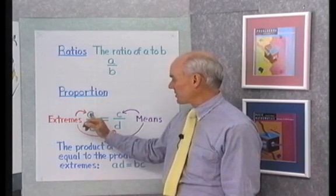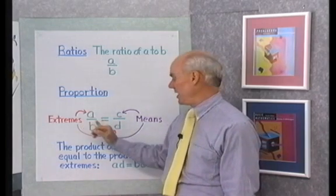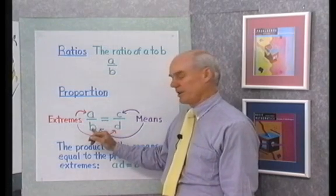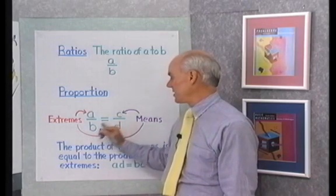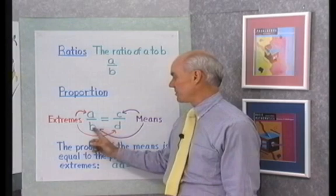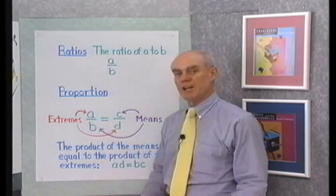The two outside numbers, that is, this first number A and this last number D, those are called the extremes of the proportion. And the two middle numbers, this B and this C, those are called the means of the proportion. So, the outside numbers are the extremes, and the inside numbers are the means.